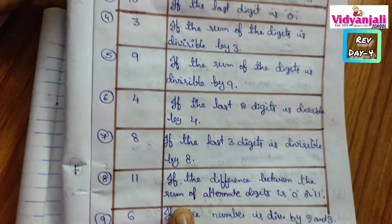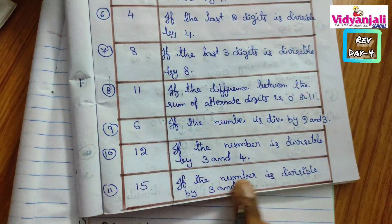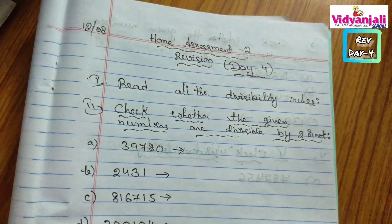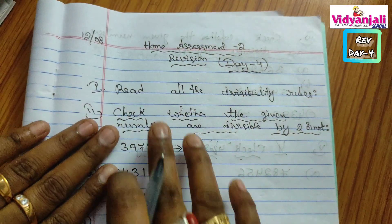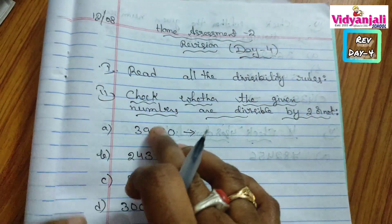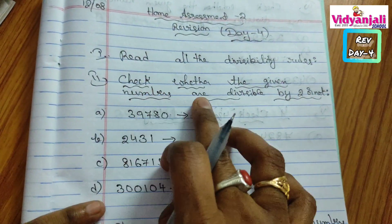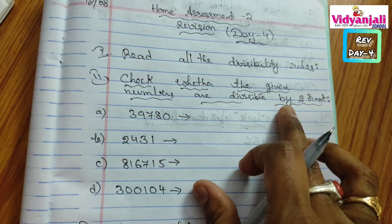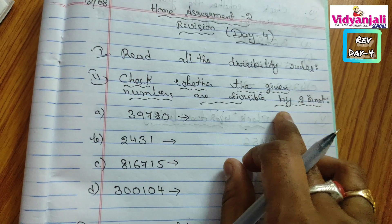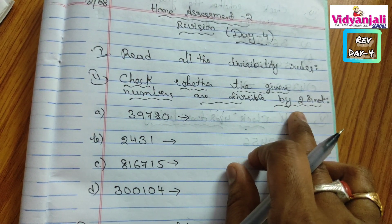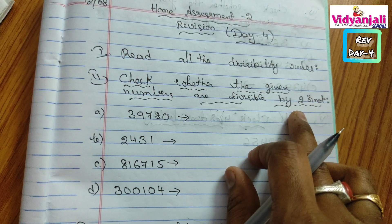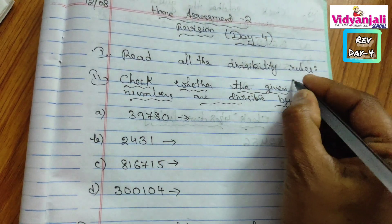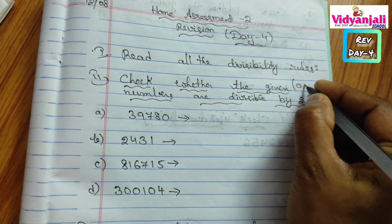You have to read all the divisibility rules. Then we are going to start the 2nd Roman. Check whether the given numbers are divisible by 2 or not. What is the divisibility rule for 2? If the number ends with 0, 2, 4, 6, or 8, then we say the number is divisible.